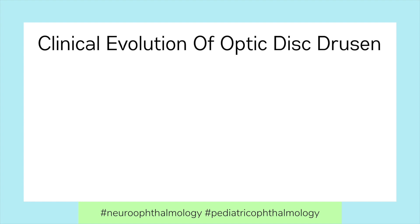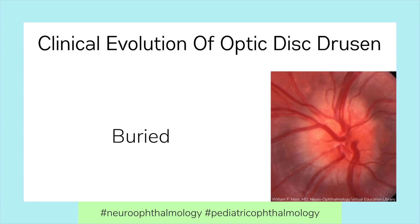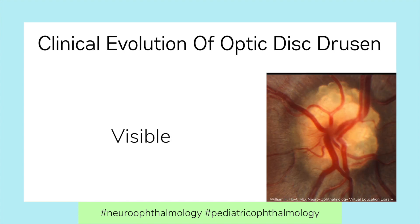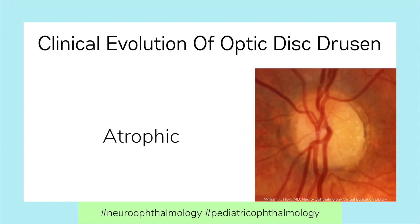Optic Disc Drusen change appearance throughout life. In childhood, the drusen may be buried and may resemble optic nerve edema, eventually reaching the optic nerve surface where they appear as round, whitish-yellow refractile bodies. In later years, the drusen may regress, resulting in an atrophic-appearing optic nerve with minimal elevation.